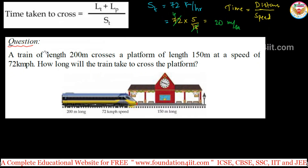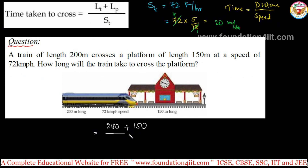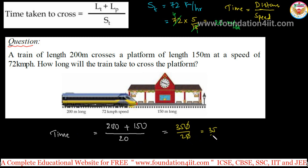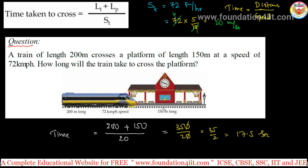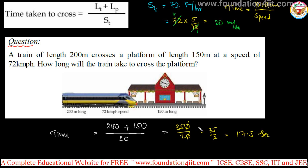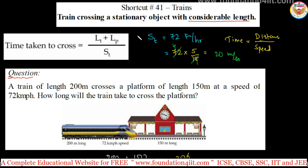Now we can apply the formula. Speed is 20 meters per second. Time taken to cross = (length of train + length of platform) / speed = (200 + 150) / 20 = 350 / 20 = 17.5 seconds. The train takes 17.5 seconds to cross the platform. When crossing a platform or bridge, take the total length of both the train and the platform as the distance and apply this formula to get the time.